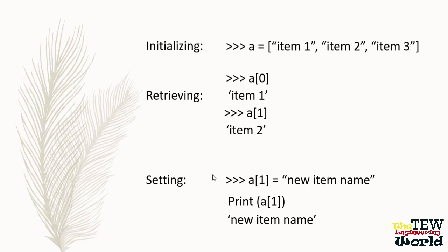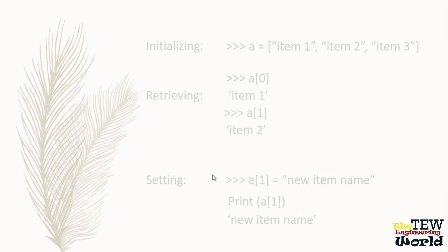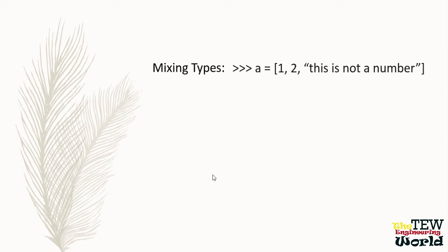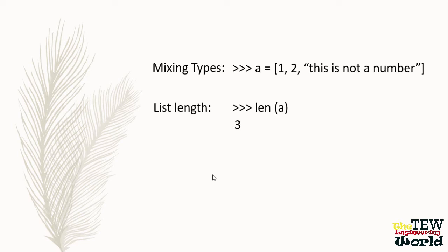If you print the element at index 1 with print A square bracket 1, then it will print out the new element which is new item name. In a Python list, you could even mix types, for example with numbers and a string. To find the length of a list, you can call the len function with the list as the input. So if there are three items in list A, length of A would return 3.